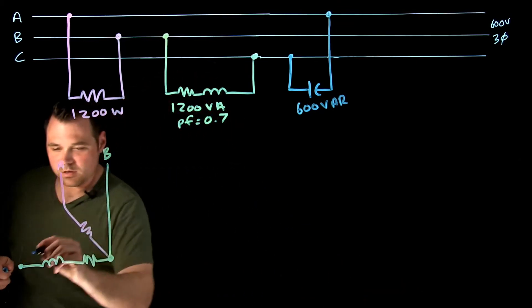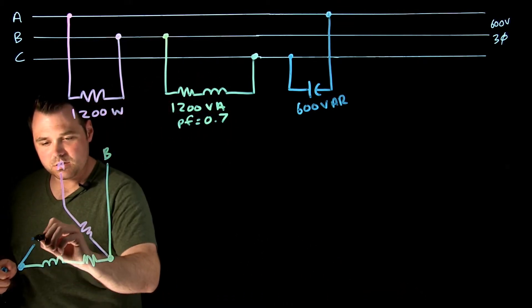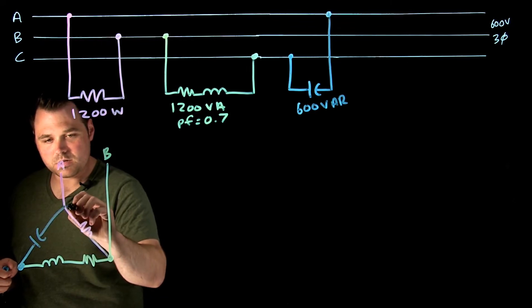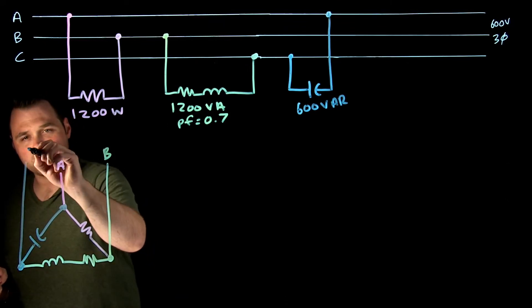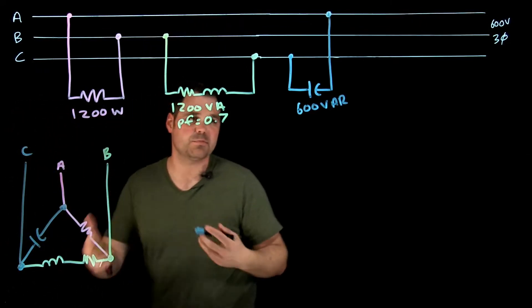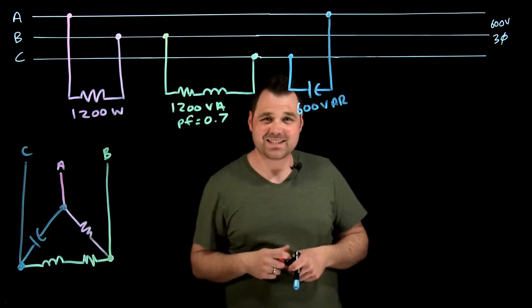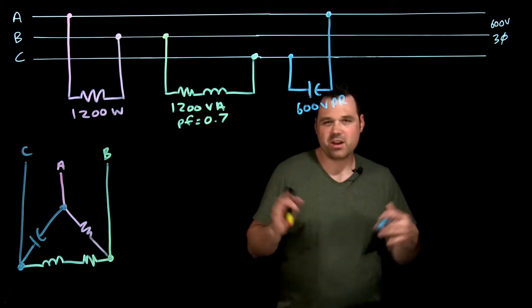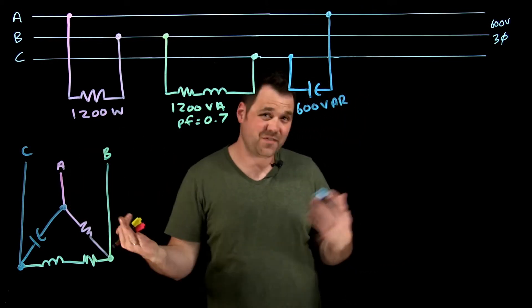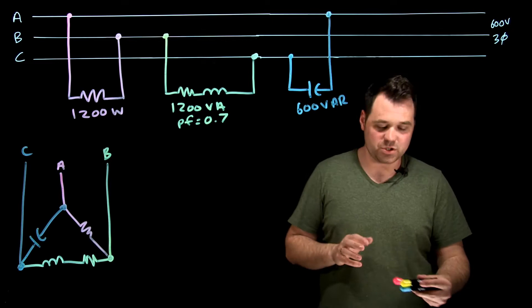And then from C to A is where I've got that cap. So those are connected in delta, those three loads across each phase. I'm seeing that 600 volts, and they all have their line current and their phase current as well, which we're not going to get into in this video.